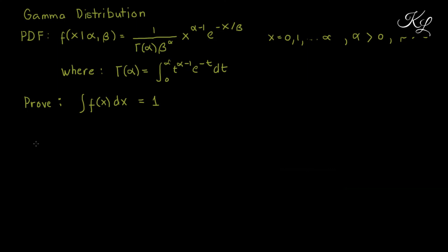Hello everyone. In this video I'm going to show that the integral of the probability density function for the gamma distribution is equal to 1. This is one of the properties of a probability distribution — that the integral of its probability density function is equal to 1.